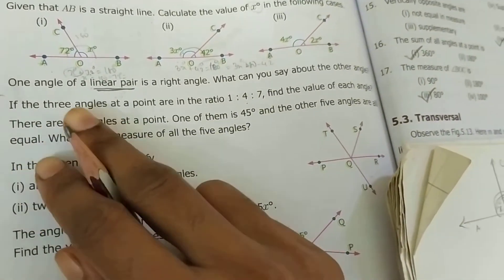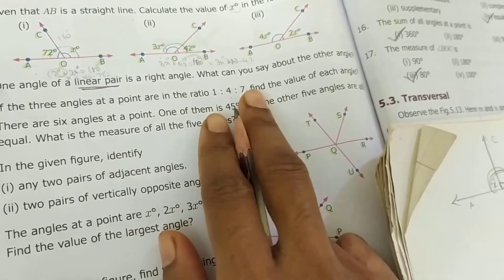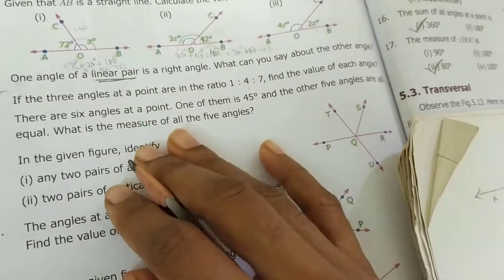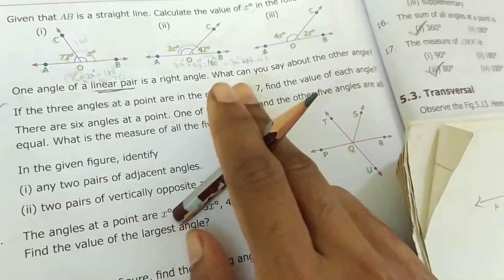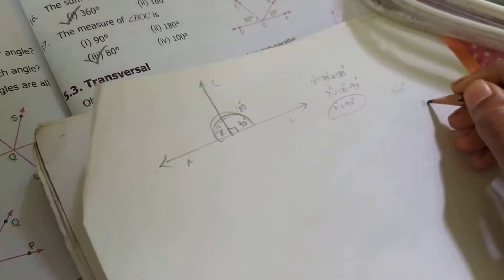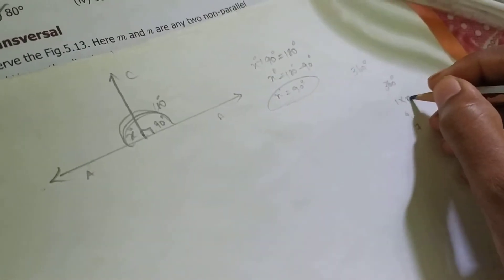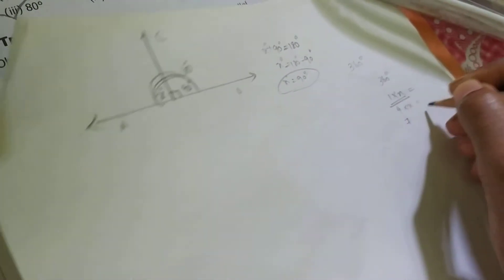If the three angles at a point are in the ratio 1:4:7, find the value of each angle. They didn't mention linear pair or vertically opposite — nothing. So normally the degree is 360 degree. One rotation is 360 degree. So what they have given is the ratio 1:4:7. In 360 degree we are having the ratio 1, 4, 7. So 1 into some x, 4 into some x.